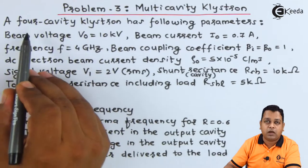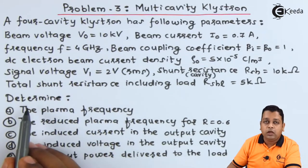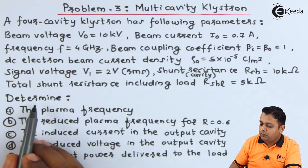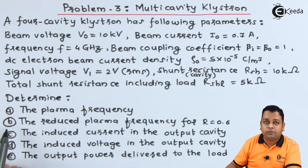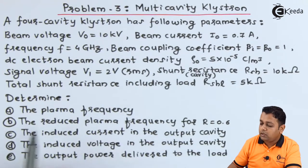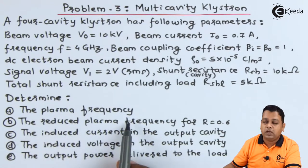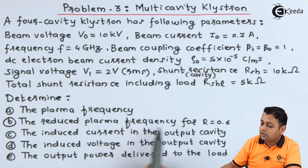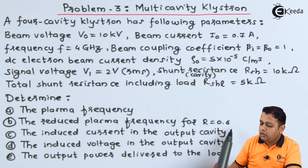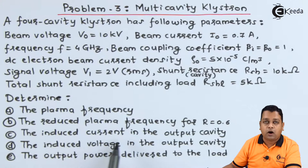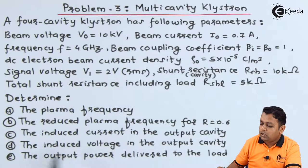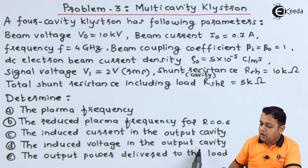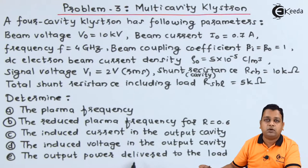4 is the number of cavities. Now we have to determine: in part A the plasma frequency, in part B the reduced plasma frequency where R is equal to 0.6, in part C the induced current in the output cavity, in part D the induced voltage in the output cavity, and lastly the output power delivered to the load.